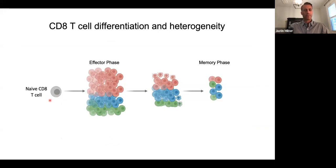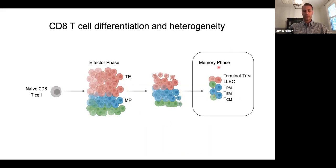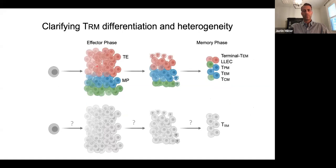During an acute viral or bacterial infection, antigen-specific CD8 T cells will rapidly expand and differentiate into effector cells that are really critical for mediating pathogen control. Following clearance of the pathogen, a majority of these cells will undergo contraction and a small population will persist and form long-lived memory T cells. There's well-described heterogeneity of both the effector phase and memory phase. We often subset these effector cells into TE, or terminal effector, which tend to be terminally fated or relatively short-lived, as well as memory precursor cells, which preferentially give rise to long-lived memory T cells.